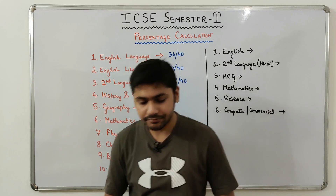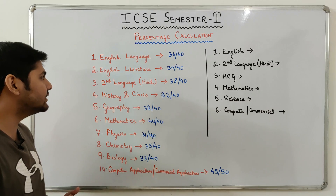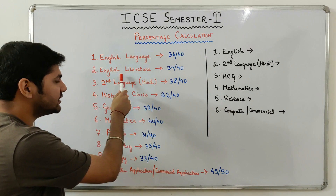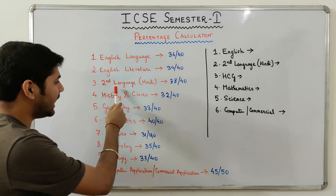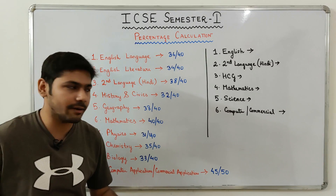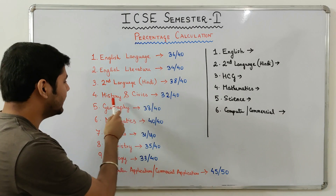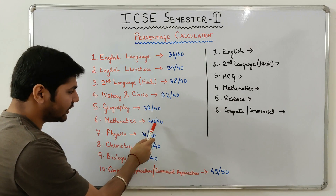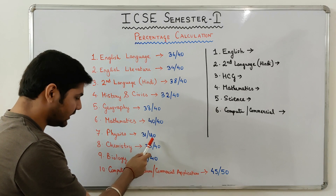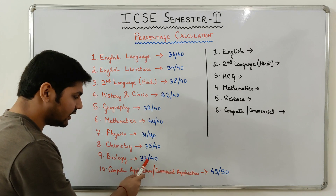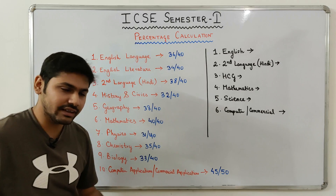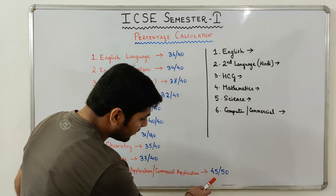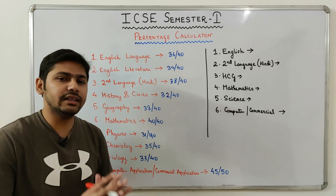Now let's begin. Say for example your results look like this: in English Language you scored 36 out of 40, in English Literature your score is 34 out of 40, in Second Language (Hindi, Bengali, Assamese, etc.) your score is 38 out of 40, in History and Civics 32 out of 40, in Geography 38 out of 40, in Mathematics 40 out of 40, in Physics 31 out of 40, in Chemistry 35 out of 40, in Biology 33 out of 40, and in Group 3 Elective (Computer Applications, Commercial Applications, or Economic Applications) you score 45 out of 50.